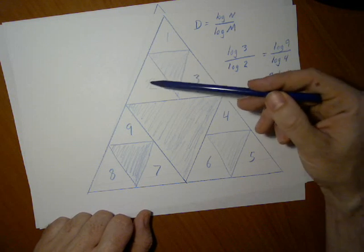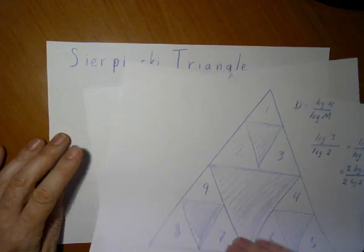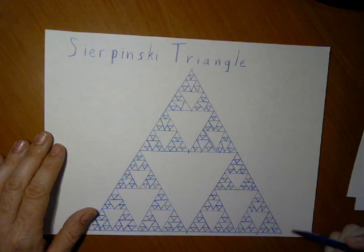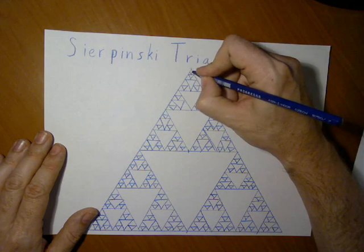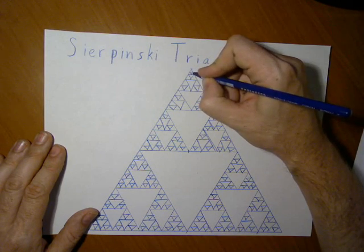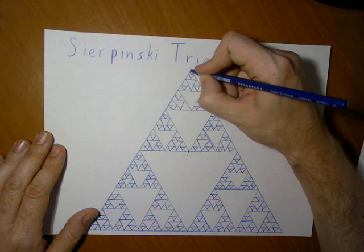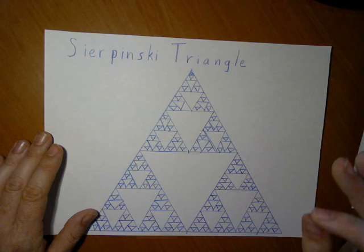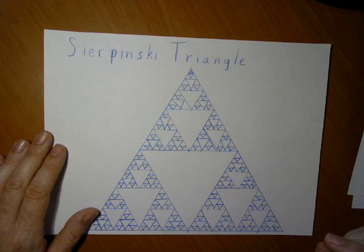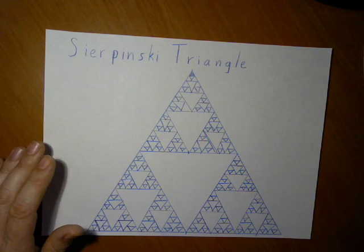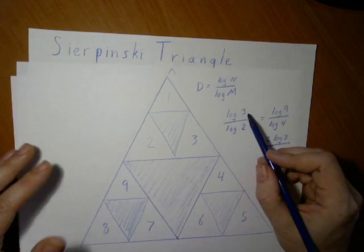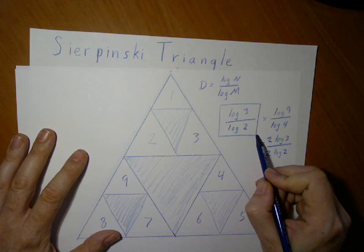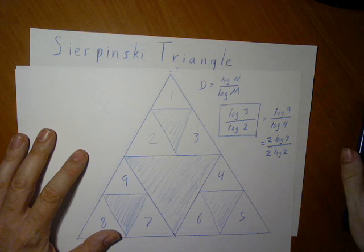If we continue this process of removing the center triangle ad infinitum, we get something that looks a little bit like this. I have drawn this out for six generations, and theoretically I would continue further and further removing the center triangles — it gets harder and harder to do that. But the key point is that the fractal dimension, the degree of self-similarity, remains the same. In our case we have log 3 over log 2. We can find the decimal version of that, but this is exact.